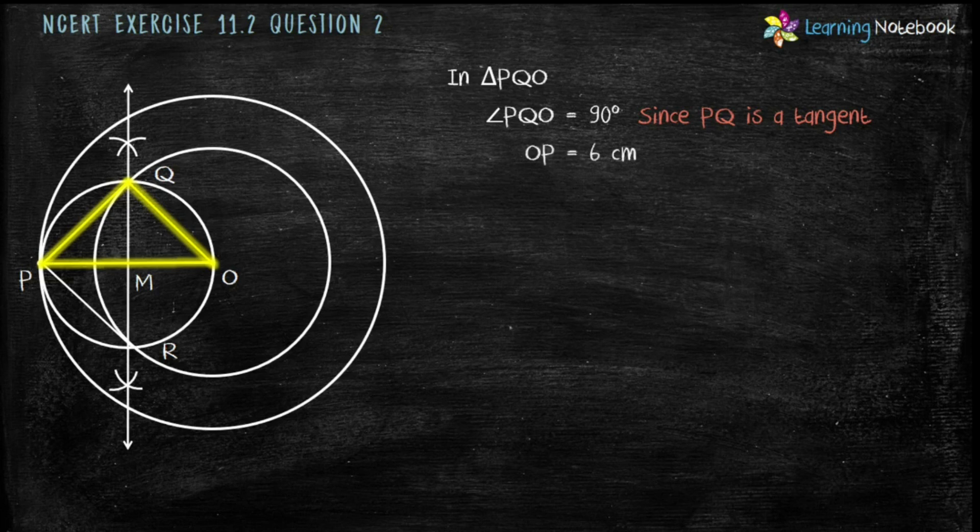We know OP equals to 6 cm, which is the radius of the outer circle, and OQ equals to 4 cm, which is the radius of the inner circle.